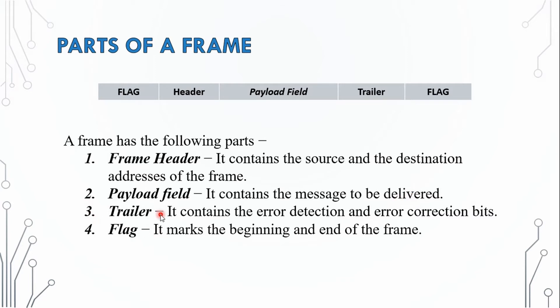The third part is the trailer — it contains the error detection and error correction bits. The fourth part is the flag — it marks the beginning and end of the frame.